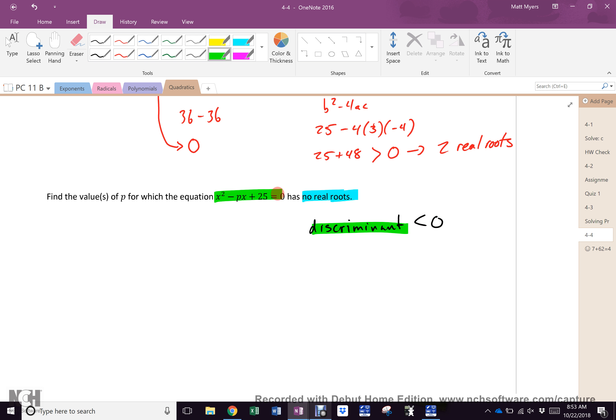The discriminant must be less than 0. Do I have a discriminant in there? I do kind of, don't I? But there's a problem. What's the problem? There's a P. So, if I was going to do this, just as a discriminant, what would it look like? How would I use this with these values? What would I write? P² - 4 times 1 times 25, right? And what would that be?